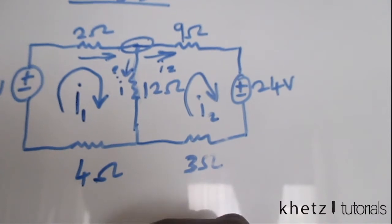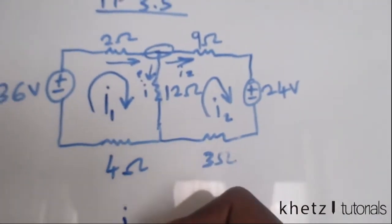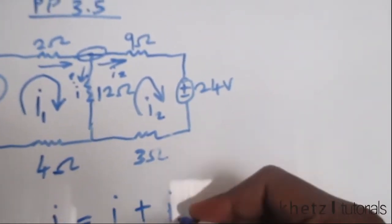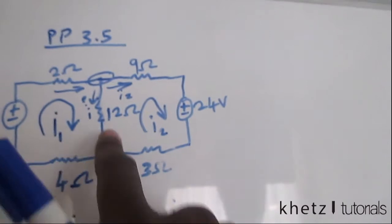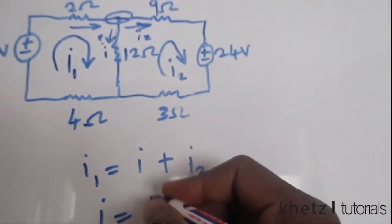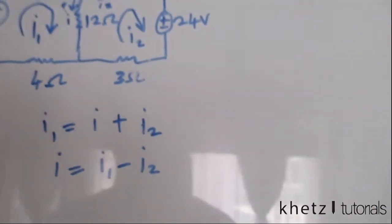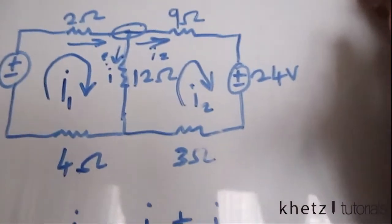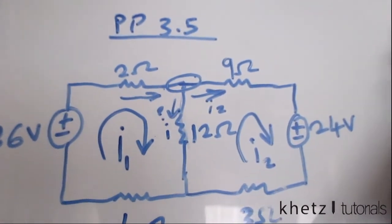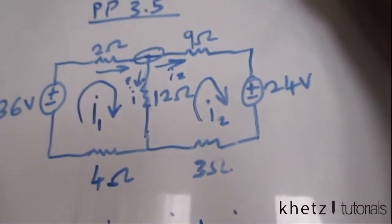So i1 splits into i and i2, therefore i1 equals i plus i2. The unknown current i is essentially equals to i1 minus i2. That is basically how you find equations for unknown currents at a node when working with mesh analysis. Let's continue to find the mesh currents.